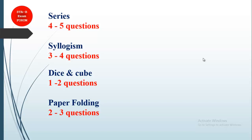These are some other categories our students were not able to recall exactly. From series, you can expect four to five questions; syllogism — three to four questions; dice and cube are typically tough, with one to two questions; and paper folding — two to three questions. You can prepare your forthcoming exam according to these topics.